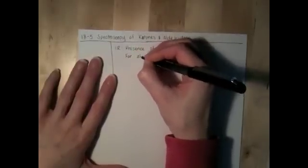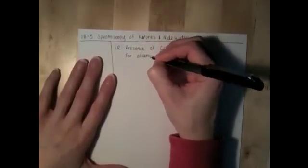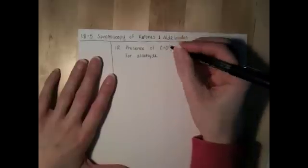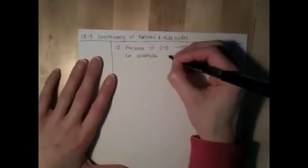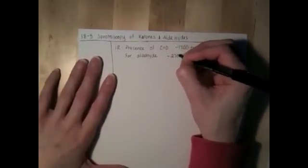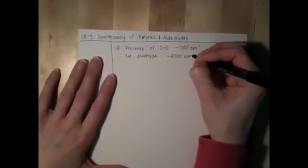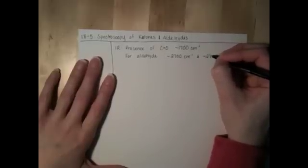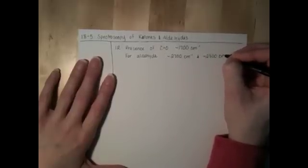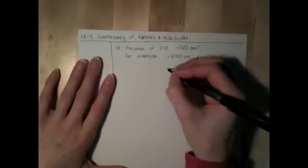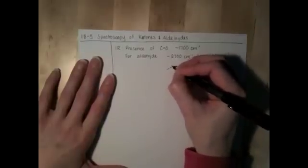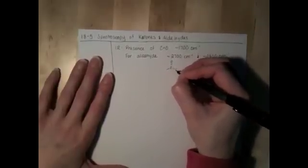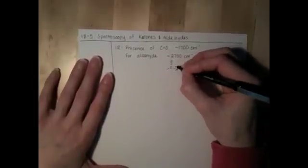If we have an aldehyde, one of the ways we can distinguish it from a ketone is the peaks that appear around 2,700 and 2,800 due to the carbon-hydrogen stretching of the hydrogen that's attached directly to the carbonyl group, that bond right there.